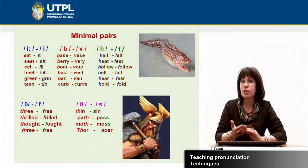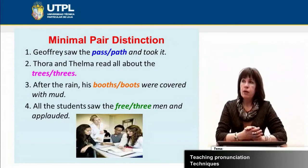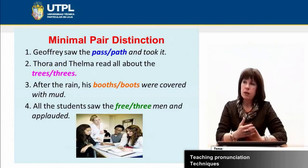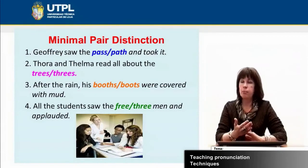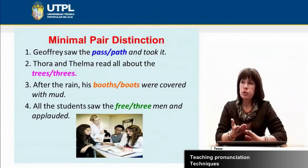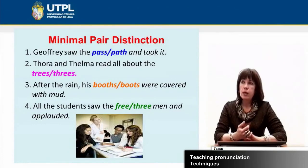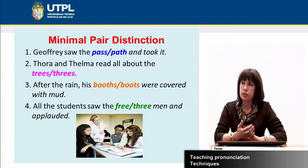Another technique is called minimal pair distinction. In the previous activity, students were expected to produce the sounds, but in minimal pair distinction you may do it in written form — students are given an option between two words and they have to underline or cross out the word that matches the meaning of the sentence.